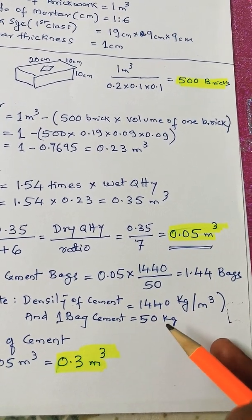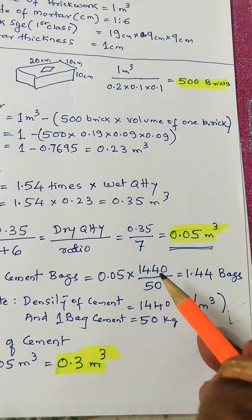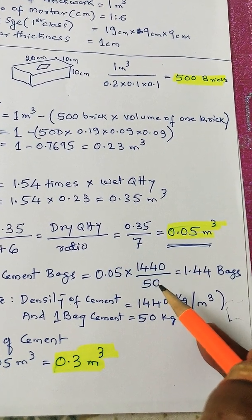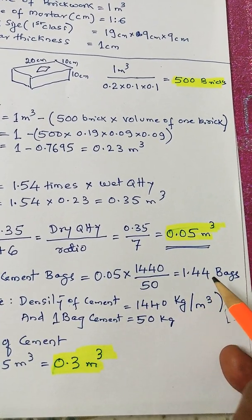Divided by the quantity of cement in one bag, that is 50 kg. So 1440 divided by 50 kg. You will get 1.44 bags.